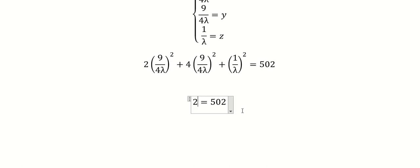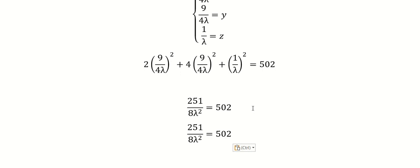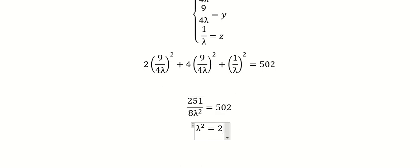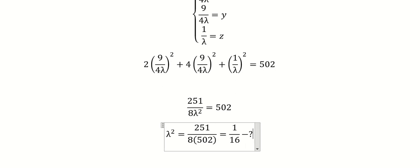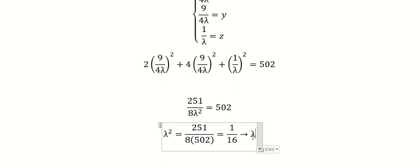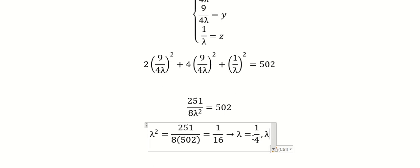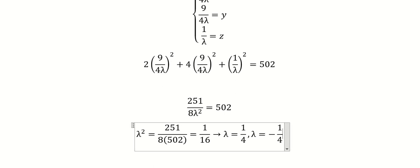We have 251 over number 8 lambda squared. So we find the value of lambda squared, that is about number 8 — sorry — 502, and move to the left. This is about number 1 over 16, and now we take the square root of both sides, so lambda equals 1/4 and lambda equals negative 1/4.